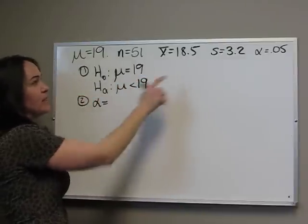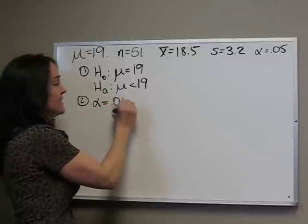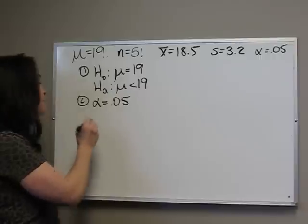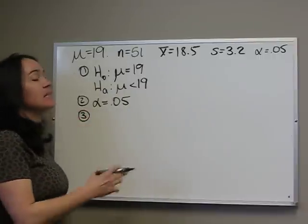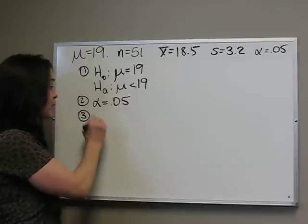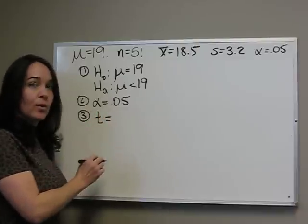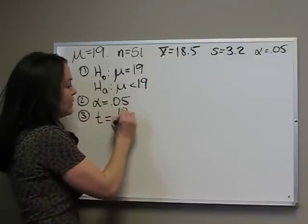Step 2 is just to restate our significance level, .05. The third step is our test statistic. Now, since we don't know sigma, this time we're going to look at a t-score, which is x-bar 18.5